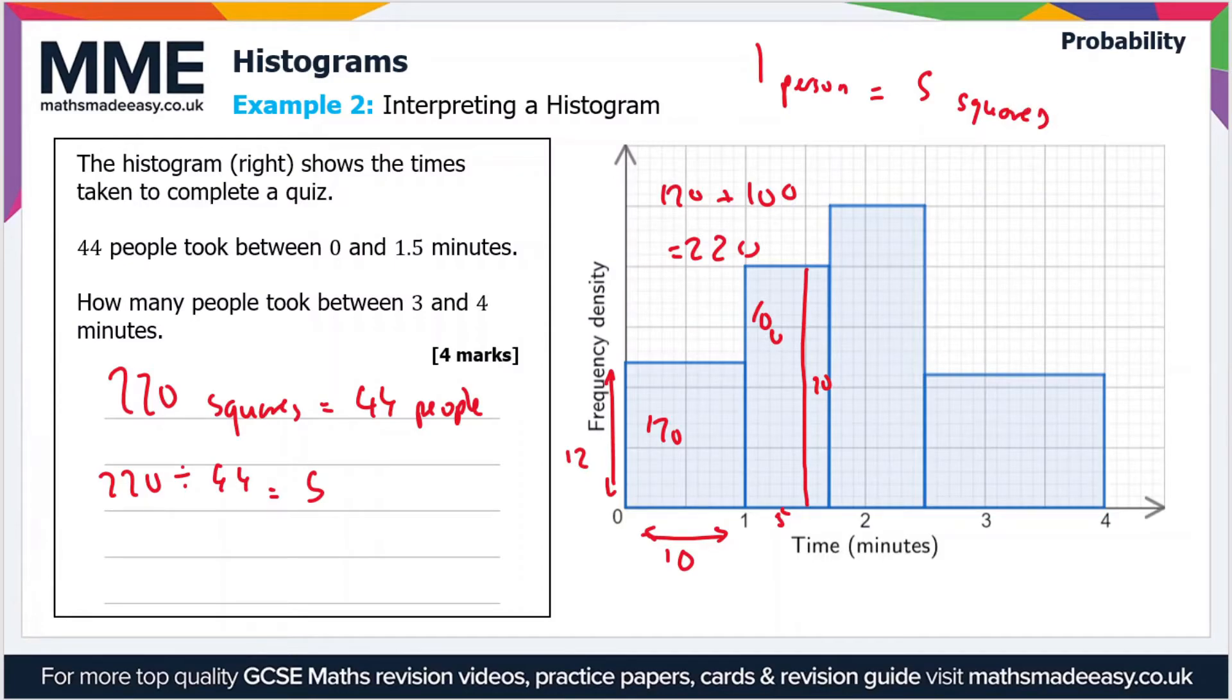Now we know how many squares is represented by one person. We just have to find out how many squares there are between three and four minutes and that will tell us how many people there are.